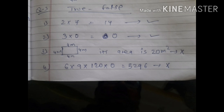Two sevens are fourteen. Second, three multiply zero equals to zero. This statement is also true. Why? Because dear students, remember one thing: whenever we have to multiply any number with zero, it will always be zero.